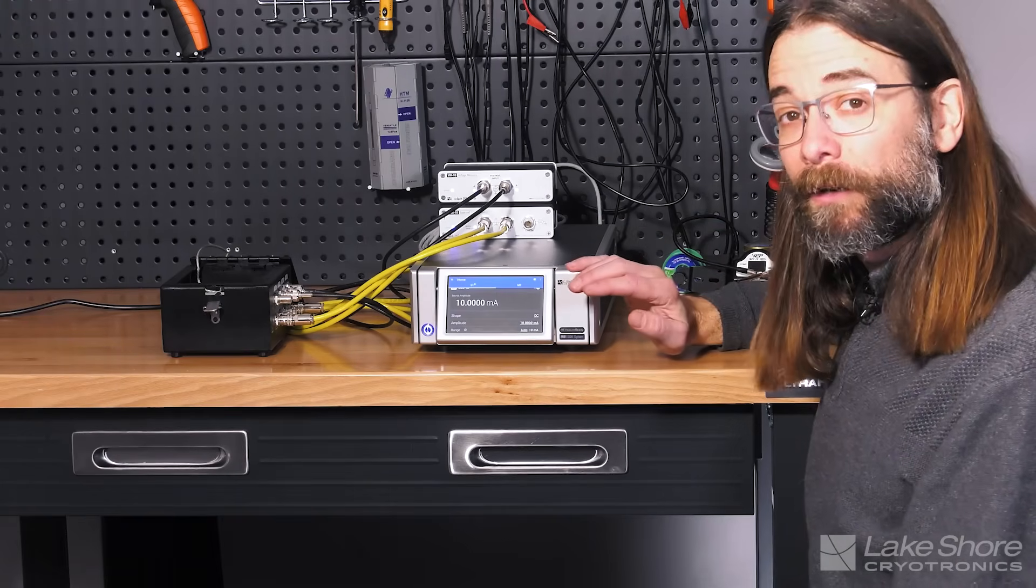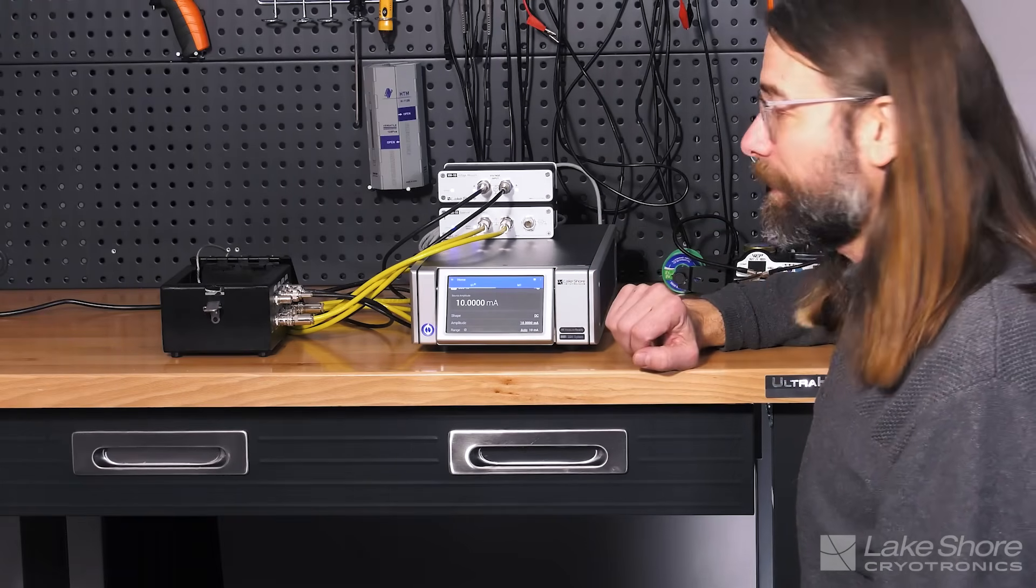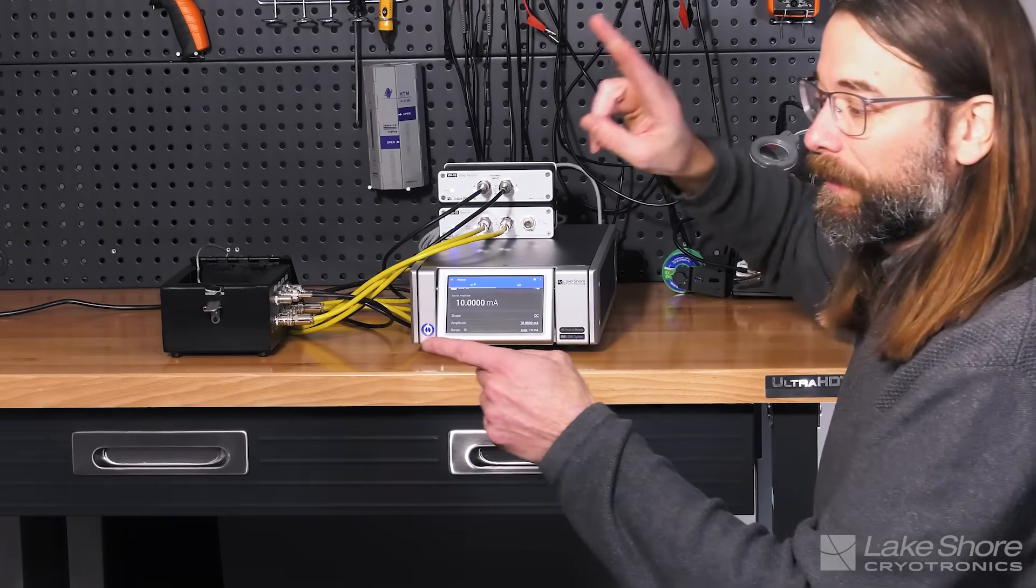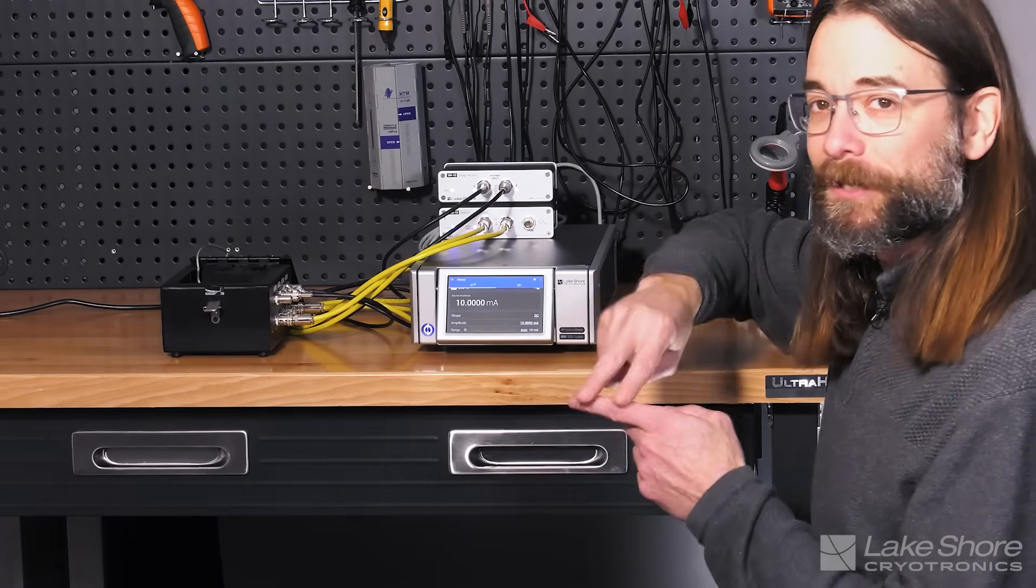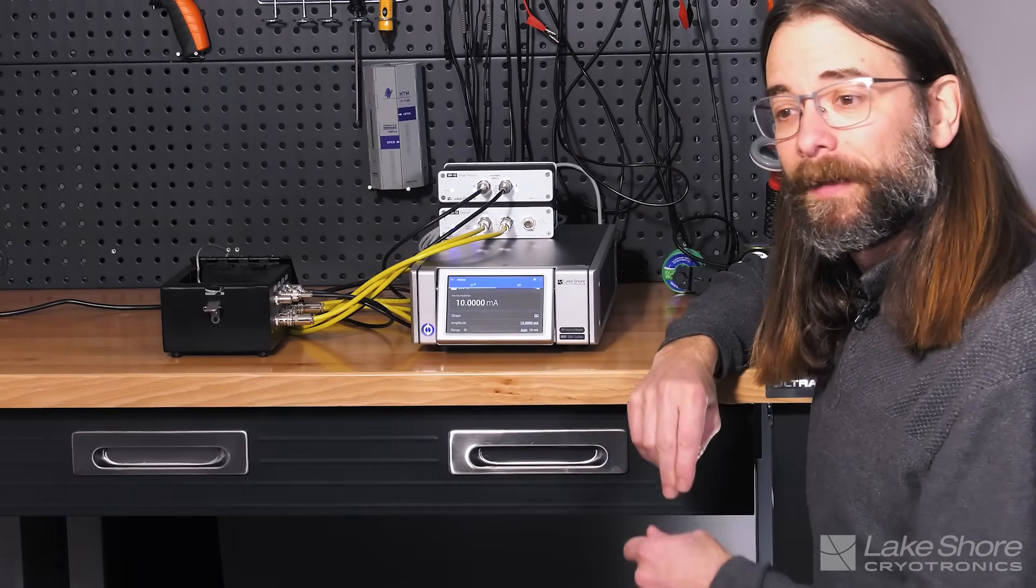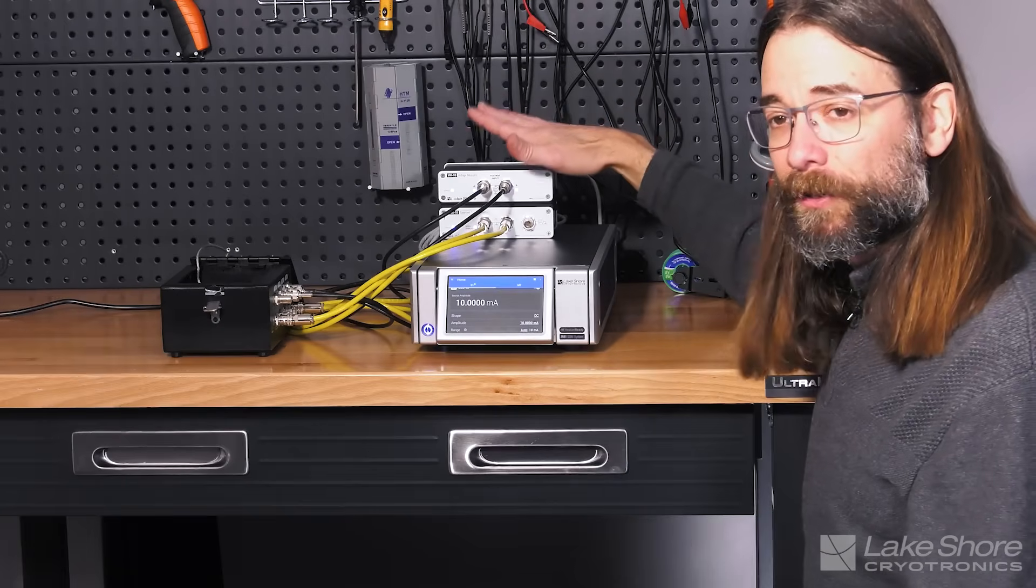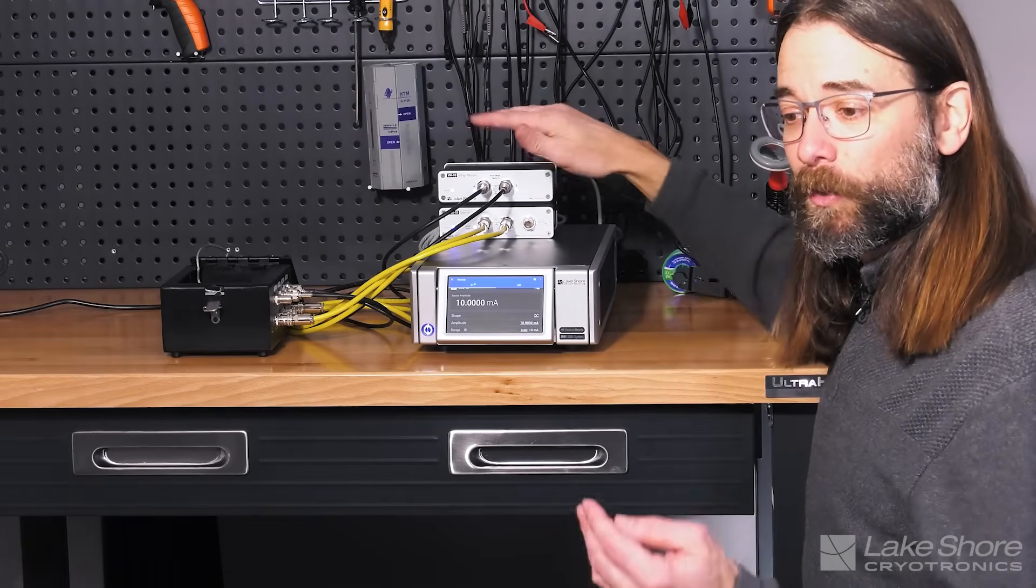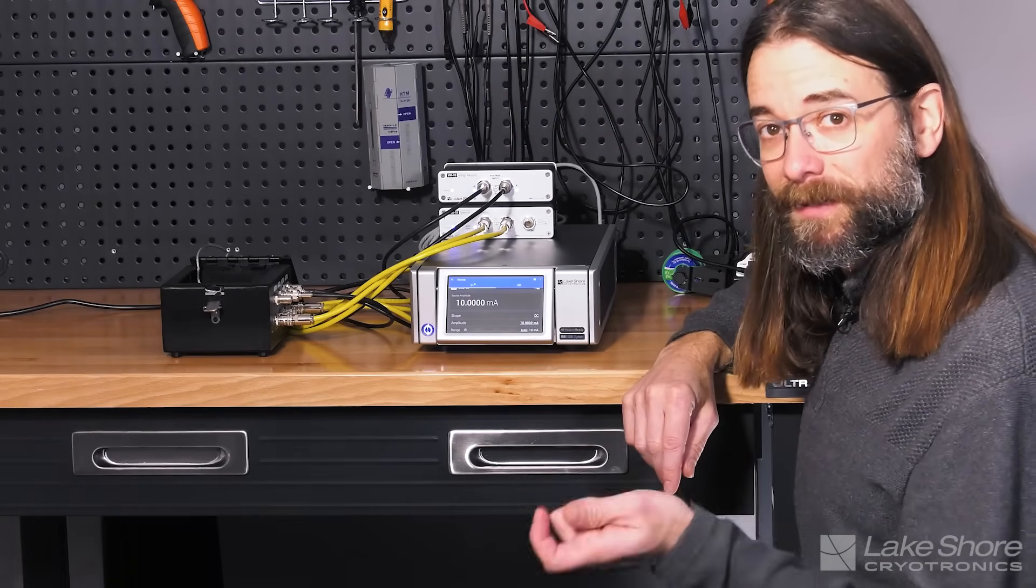This technique is called a four-wire or Kelvin measurement. And in that setup, we're sourcing current, but then we're making a remote voltage measurement on the device under test itself. And in that way, since there's very little current flow to the voltmeter, we're going to have a more accurate measurement of the resistance that we're testing.